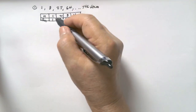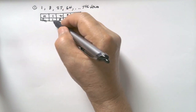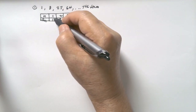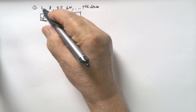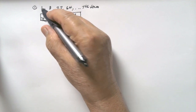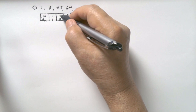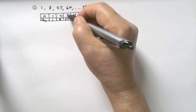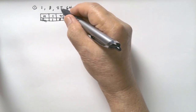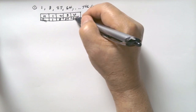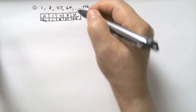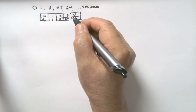Let us observe. To get 1, if we cube the position: 1 cubed gives us 1. 2 cubed gives us 8. 3 cubed gives us 27. 4 cubed gives us 64.